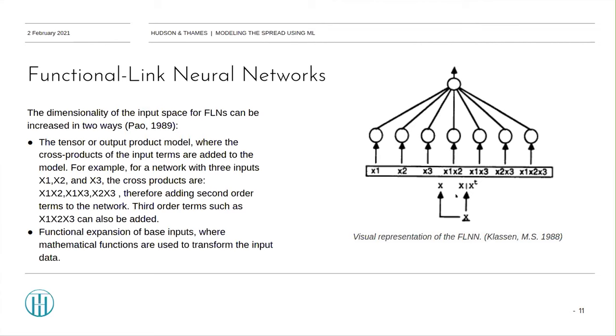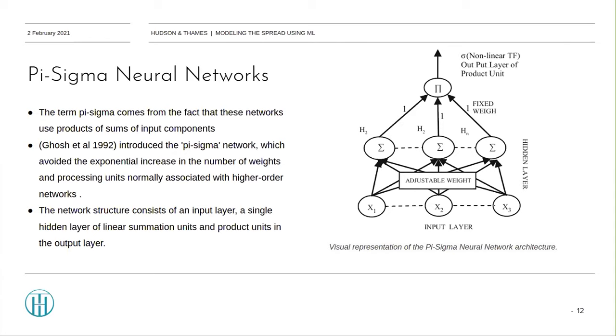Pi-Sigma neural networks. The term Pi-Sigma comes from the fact that these networks use products of sums of input components. Gauch et al., in their 1992 paper, introduced this network, which avoided the common exponential increase in the number of weights and processing units normally associated with higher-order networks. The network structure consists of an input layer, a single hidden layer of linear summation inputs, and product units in the output layer. This network utilizes product cells as the output units to indirectly incorporate the capabilities of higher-order networks.